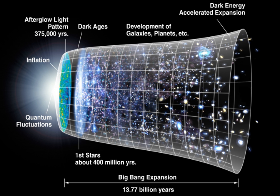A few minutes into the expansion, when the temperature was about a billion Kelvin and the density was about that of air, neutrons combined with protons to form the universe's deuterium and helium nuclei in a process called Big Bang nucleosynthesis. Most protons remained uncombined as hydrogen nuclei. As the universe cooled, the rest mass energy density of matter came to gravitationally dominate that of the photon radiation. After about 379,000 years, the electrons and nuclei combined into atoms — mostly hydrogen — hence the radiation decoupled from matter and continued through space largely unimpeded. This relic radiation is known as the cosmic microwave background radiation.